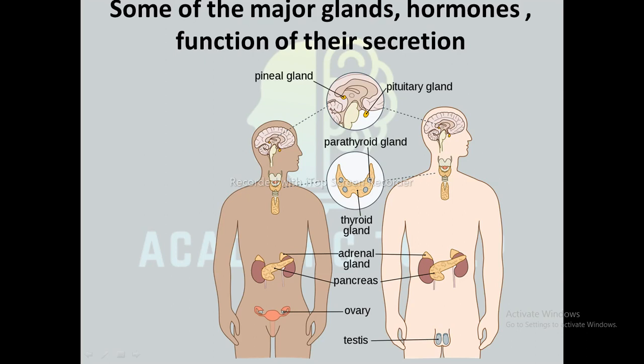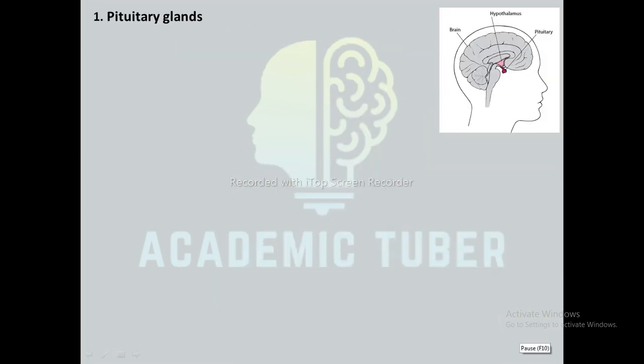The parathyroid gland is located over the thyroid gland in the throat, behind the thyroid gland in the neck. The adrenal gland is located on the upper part of the kidney. The pancreas is located behind the stomach in the loop of the duodenum. The testes are located in the scrotum below the abdomen in males, and the ovaries are located in the lower abdomen in females.